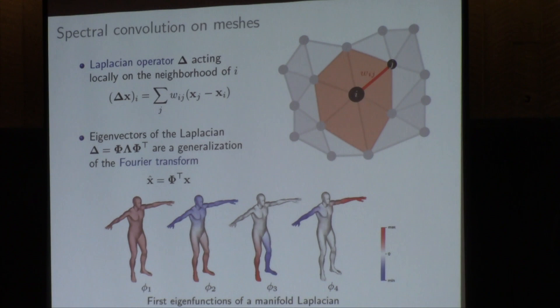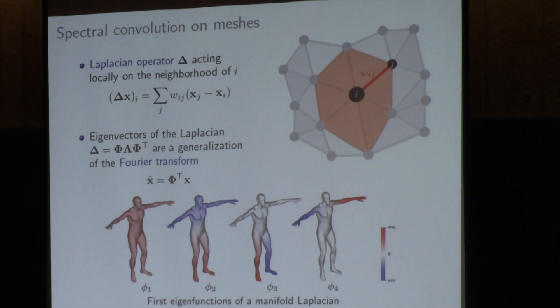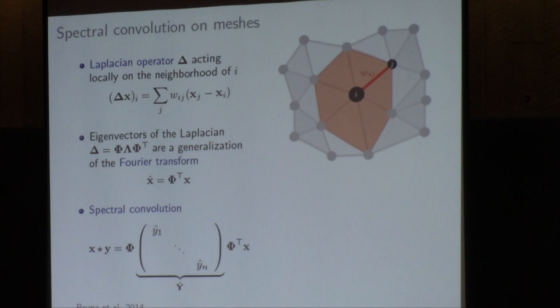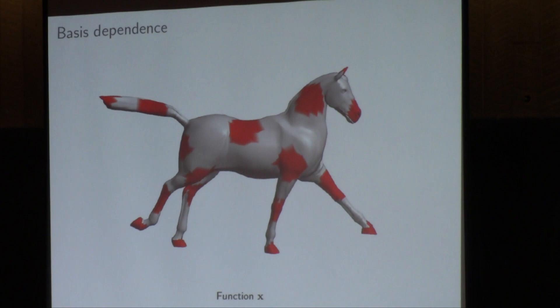Once you compute this Laplacian and its eigenvectors, you take a signal on your mesh or graph and project it onto these bases — you can then work only with Fourier coefficients. You can define convolution as pointwise product in the Fourier domain: the projection onto basis phi-transpose gives the Fourier transform, multiplication by a diagonal matrix gives the pointwise product, then inverse Fourier transform by phi. The simplest idea for non-Euclidean CNNs is to parameterize filters using these diagonal coefficients — these become the variables we want to learn.